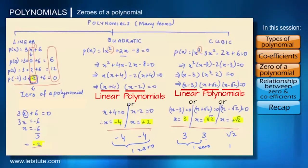So there is a possibility that we could have less than three zeros for a cubic polynomial but not more than three zeros.